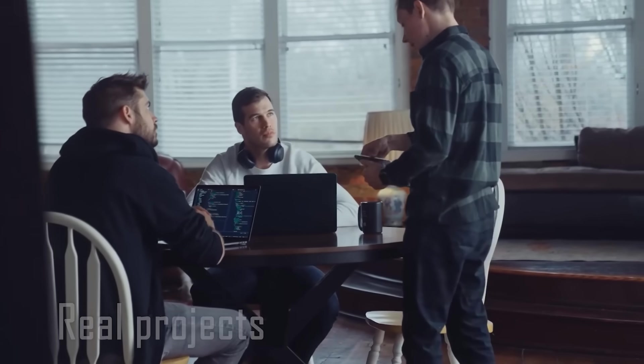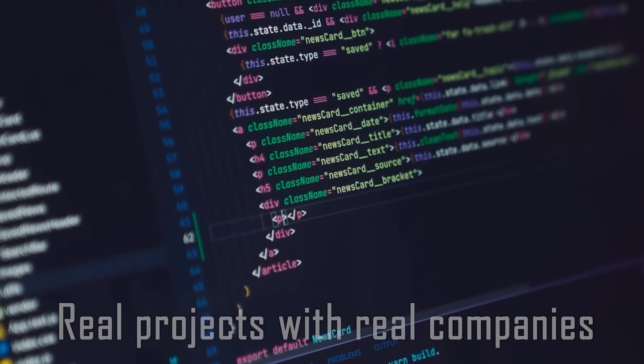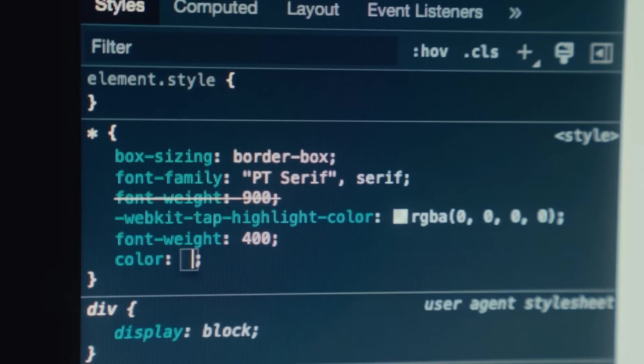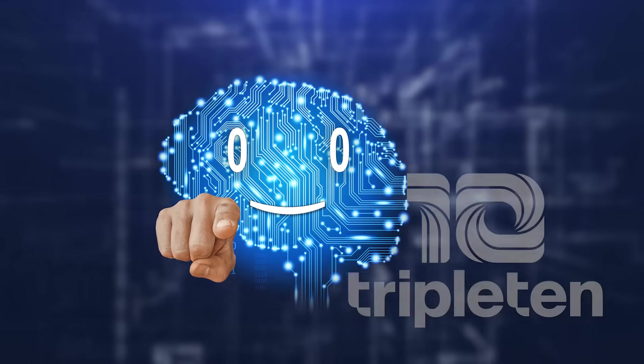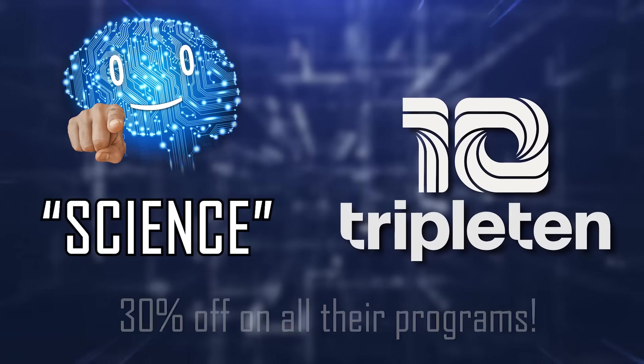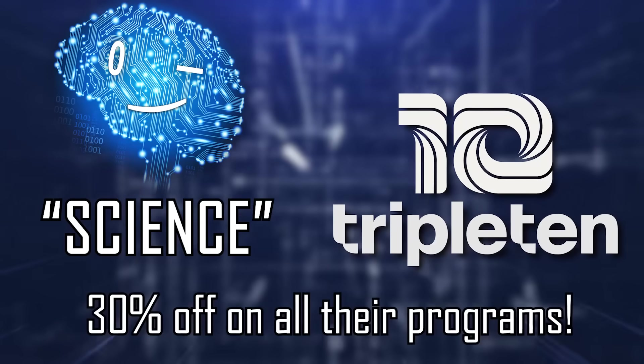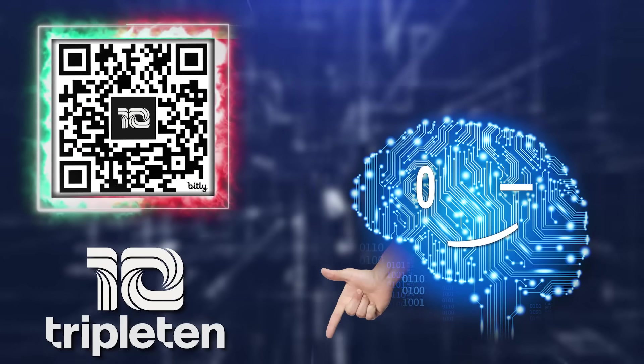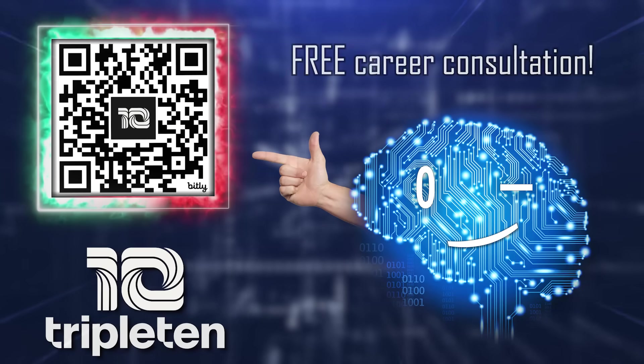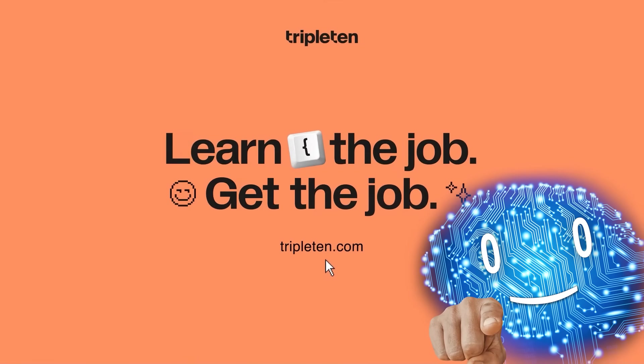Triple 10 provides real projects with real companies, giving you the experience you need to thrive in the tech world. So for your first step into the tech world, use the code SCIENCE for 30% off on all their programs. Click the link in the description or scan the QR code for a free career consultation. Hurry up, and we shall get back to our exoplanets.